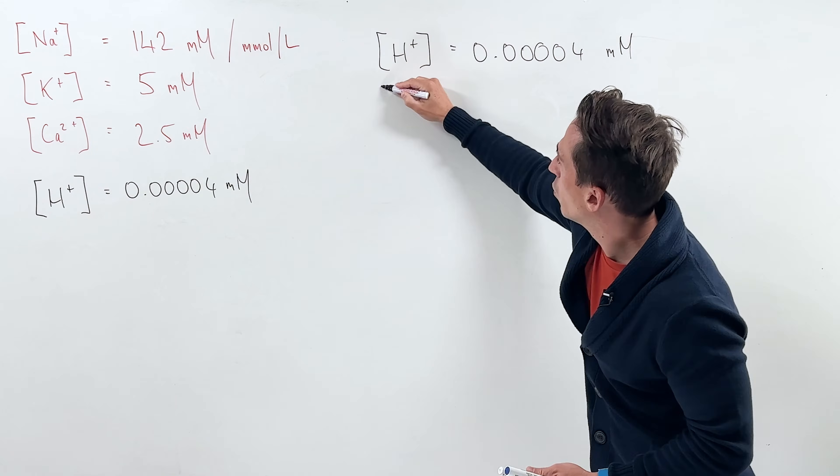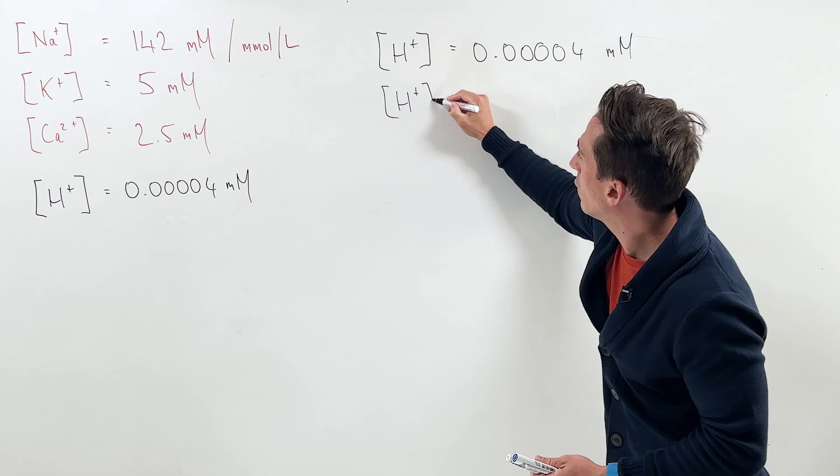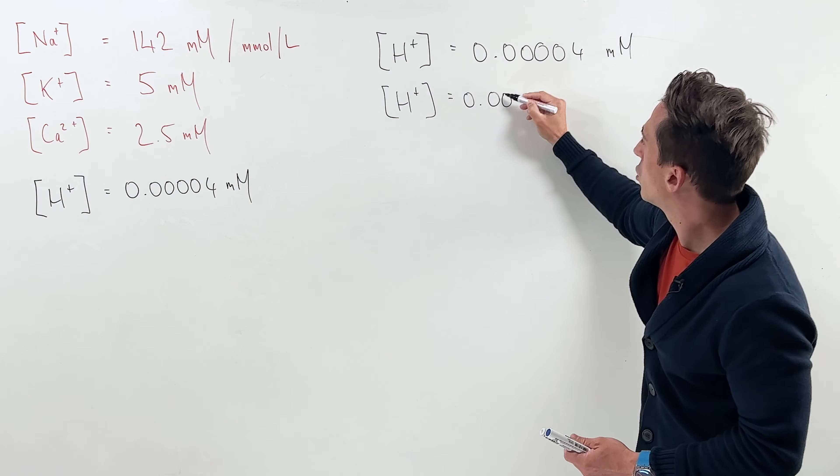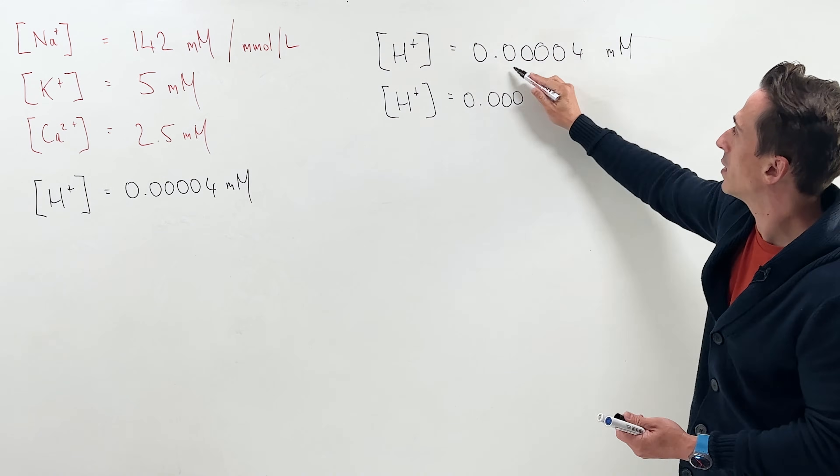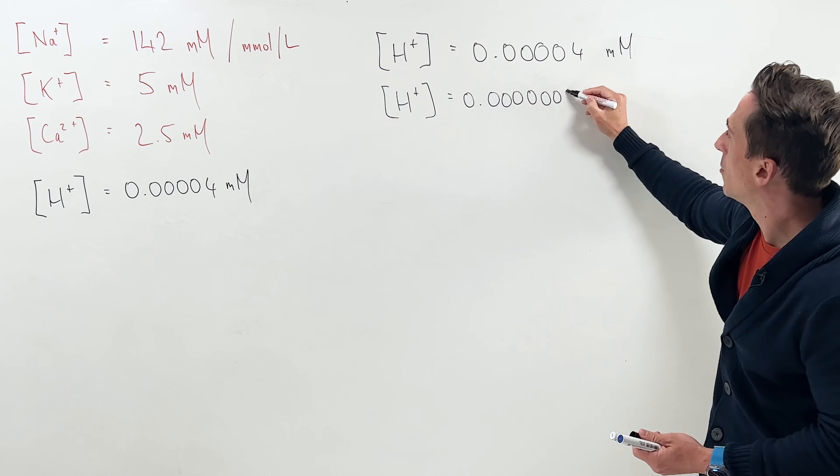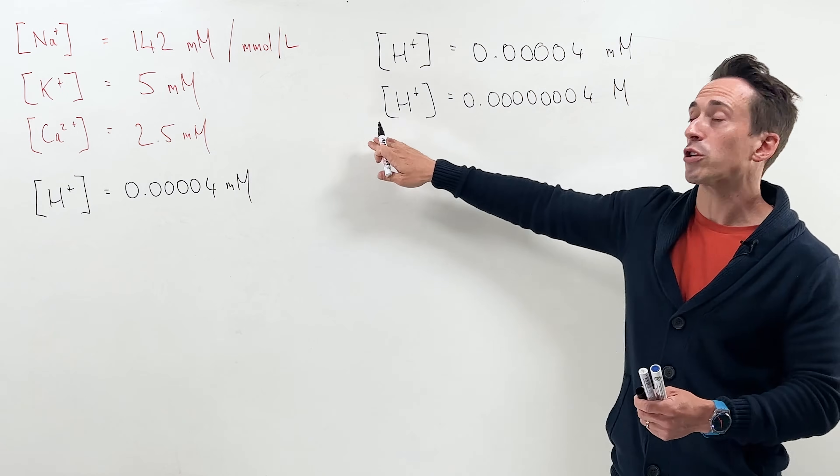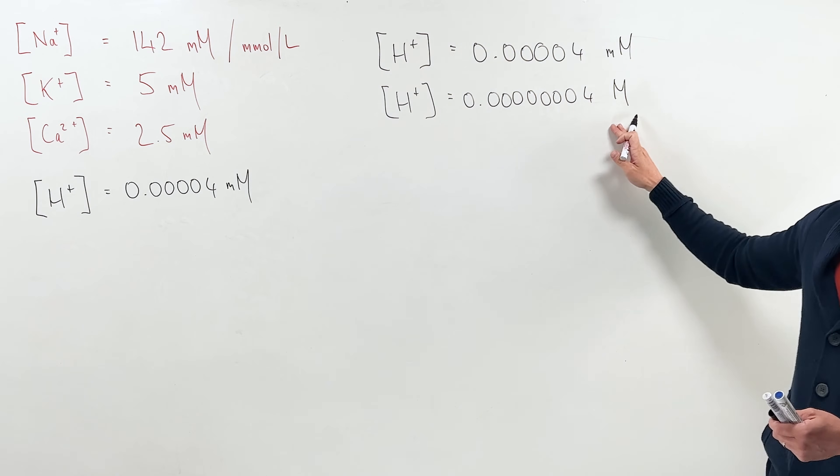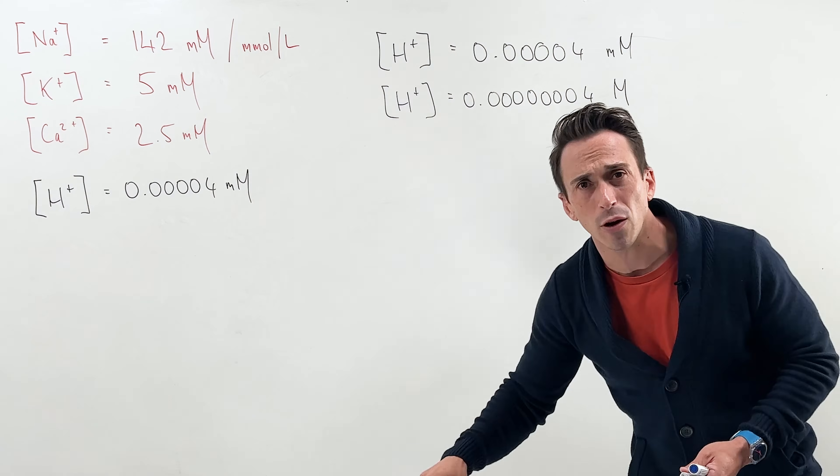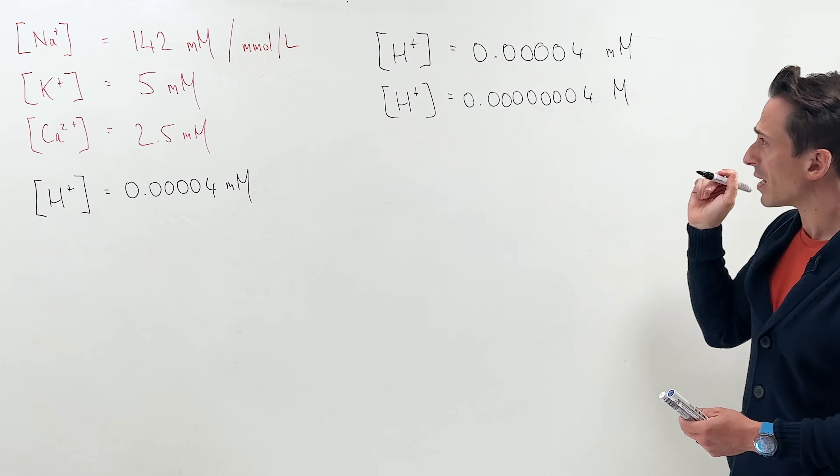So to do that, we've got the concentration of hydrogen ions equals 0.000, there's the three decimal places, let's add those four back - 00004 molar. So now we've got the concentration of hydrogen ions in our blood in molar form. Again, too many zeros. How do we get rid of it?